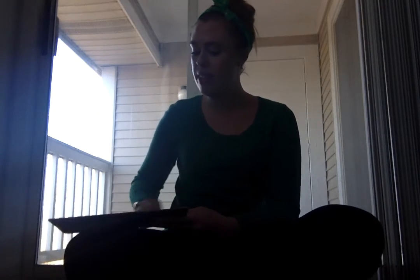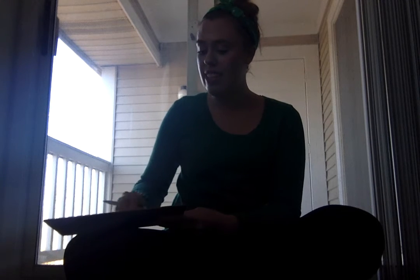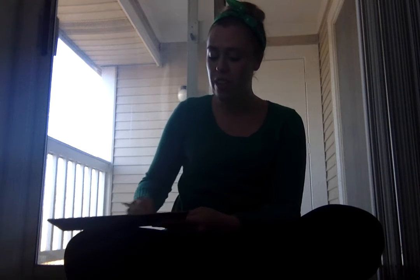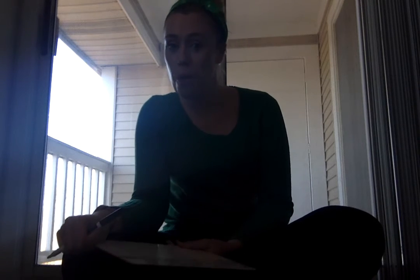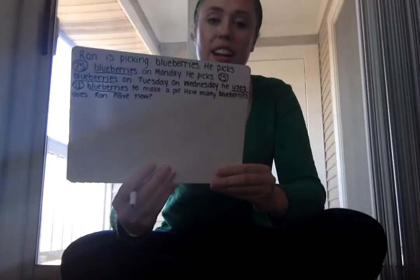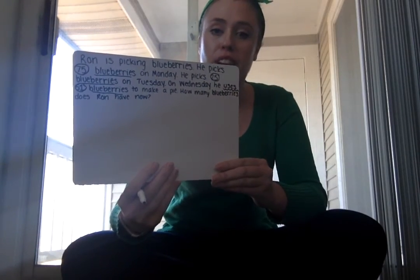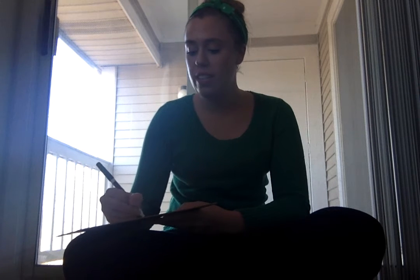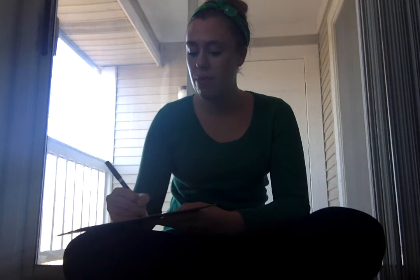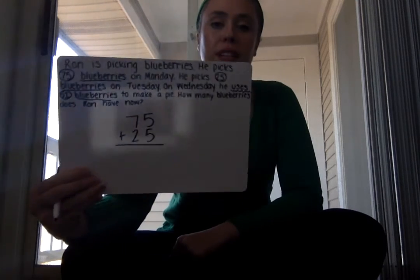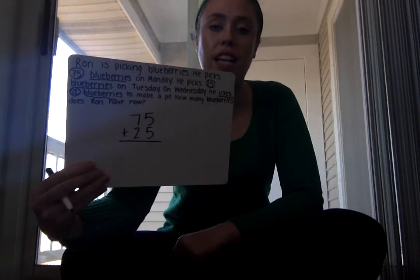Here comes the final way — the standard algorithm of addition and subtraction, the vertical addition and subtraction that many parents watching at home are probably more familiar with. We've been working on it in class and are definitely moving toward using it every time. We have 75 blueberries picked on Monday and 25 more, so we'll set it up vertically: 75 on top plus 25 on the bottom.